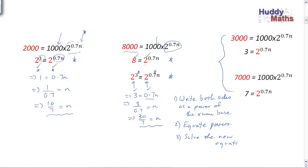Why did I park those other two over there? There's a red number missing — you can't write those two as a power of 2. That's going to be a bit challenging. We'll come back and look at that later on, and that's where the new area you might not have seen before comes in, called logarithms.